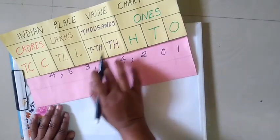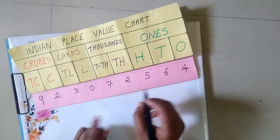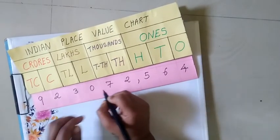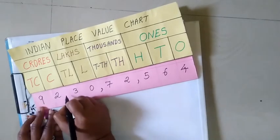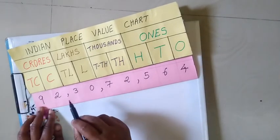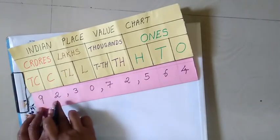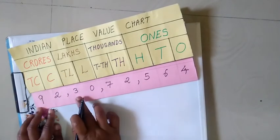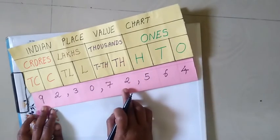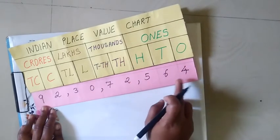Let's take another example. We put the commas first after three digits, then two digits and two digits. We read this number as 92 crores, 30 lakhs, 72,564.